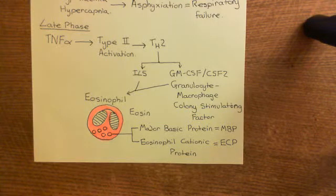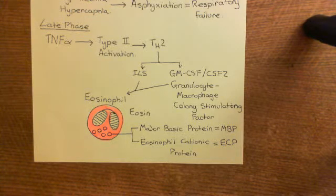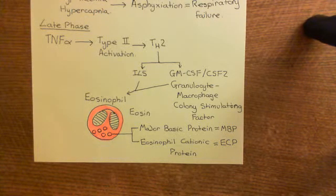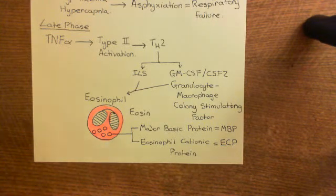The eosinophils then release two cytotoxic proteins: major basic protein and eosinophil cationic protein, which kill the epithelial cells and lead to damage of the epithelium.